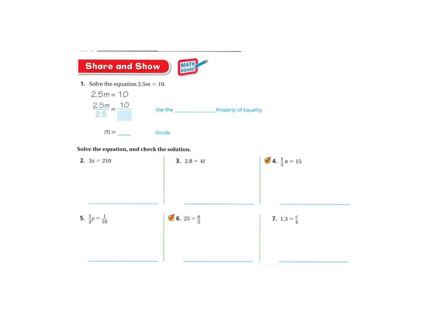To solve the equation 2.5m equals 10, first we need to isolate the m because that is what our goal is in algebra always. Since 2.5m is saying 2.5 times m, we are going to use the division property of equality and divide 2.5m by 2.5. Whatever we do to one side, we have to do to the other side. And then 10 divided by 2.5, 2.5 goes into 10 equally four times. So m equals four.